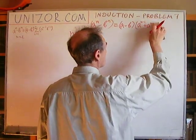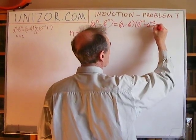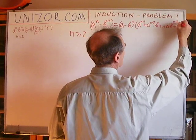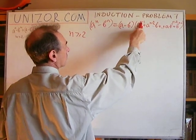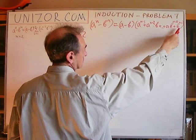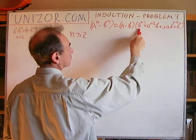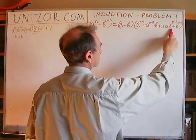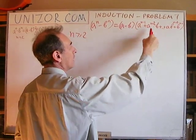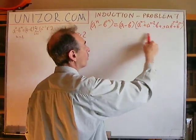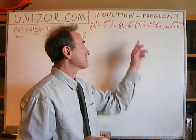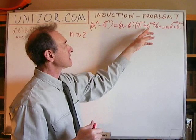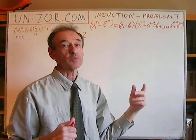What's interesting here is that the powers of a are decreasing and the powers of b are increasing. So a is decreasing from a to the n minus 1 down to a to the power of 0, which is why there is no a in the last term — it's just 1. And b is increasing from b to the power of 0 up to b to the power of n minus 1. In this sum, every product of a to some power and b to some power has a sum of powers always equal to n minus 1.